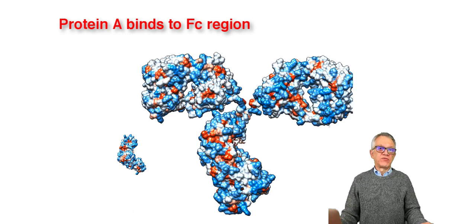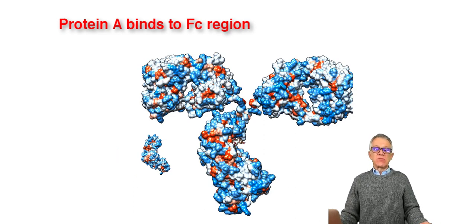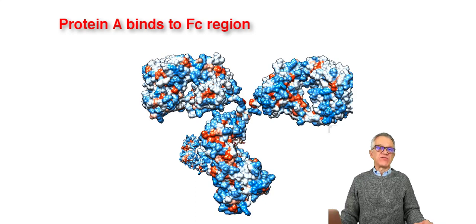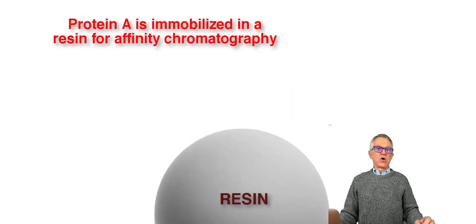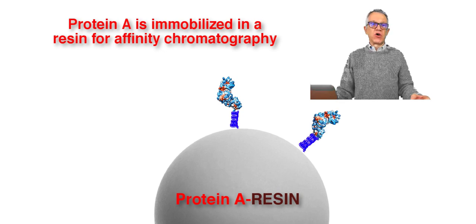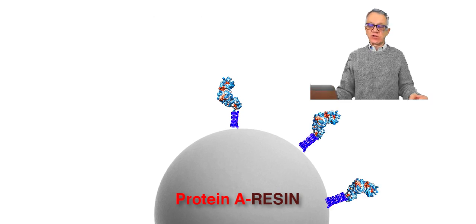What's interesting about protein A is that it binds with very high specificity to the Fc fragment, and therefore one can immobilize this protein and use it for affinity chromatography.